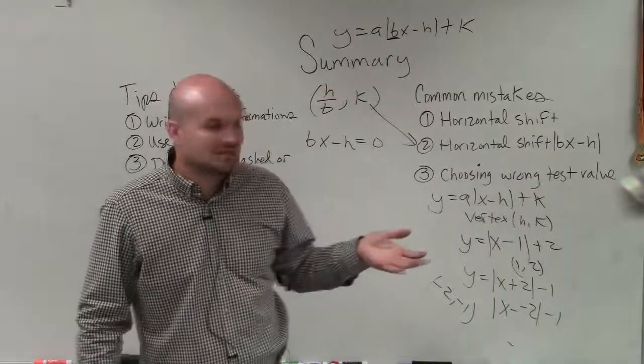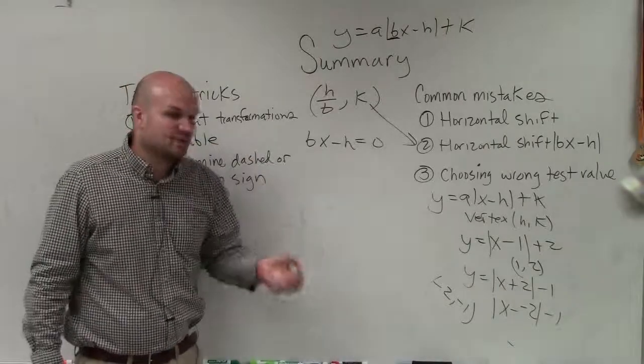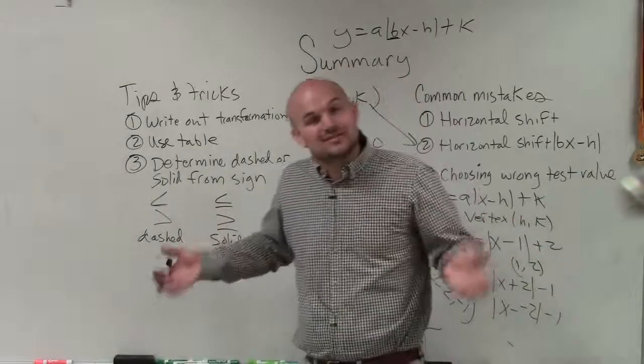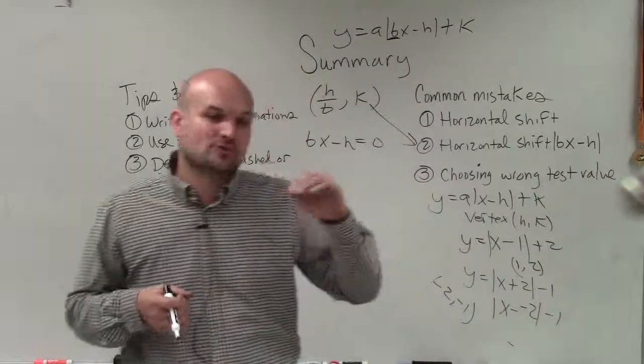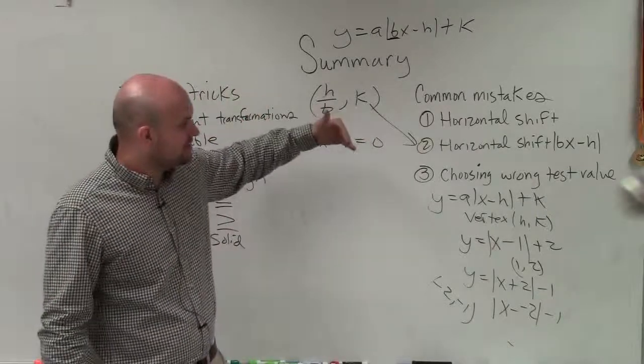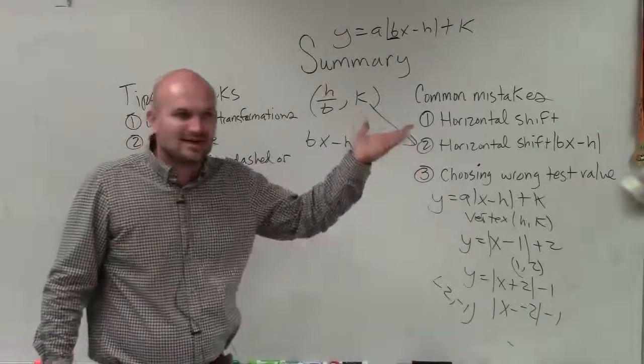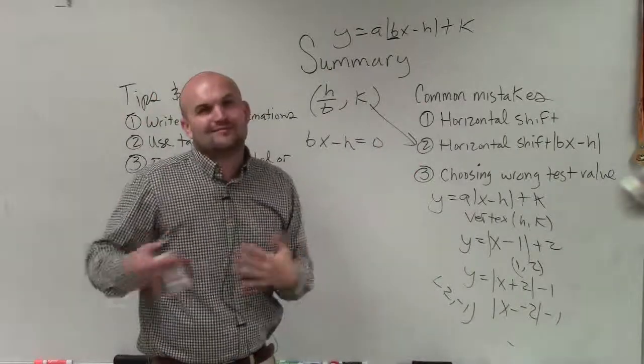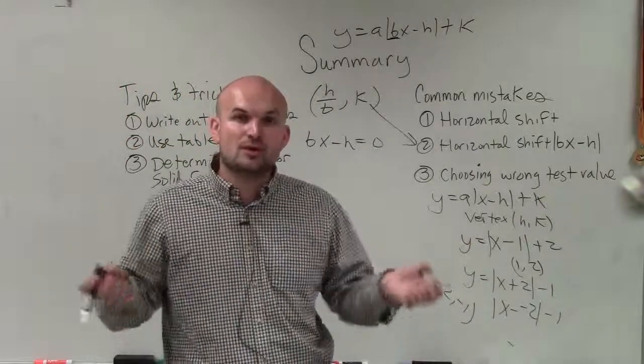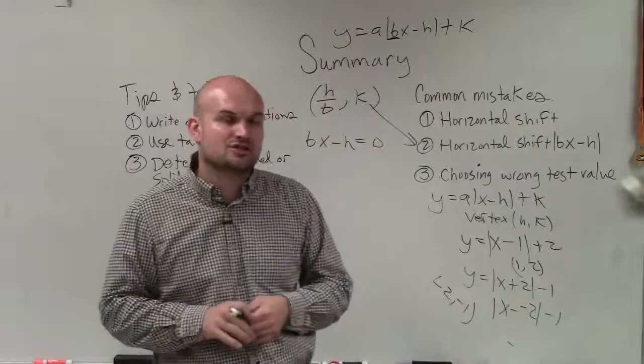The last thing is choosing the wrong test value. A lot of students will choose either a value that's already on the graph. Well, if it's already on the graph, you should already know if it's dashed or solid. You can still test it, but that's not going to help you determine if you're shading above or below. Or sometimes they'll determine what the point is, and they'll say true or false, but then they'll shade it when it's false and not shade it when it's true. We always want to shade where the rest of the points are, because whenever a point is true above our graph, that means all the points are going to be true. So that's the way we want to apply shading.